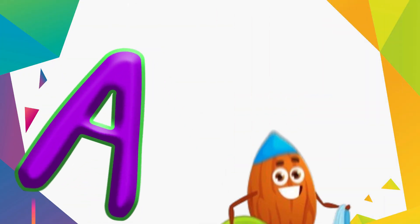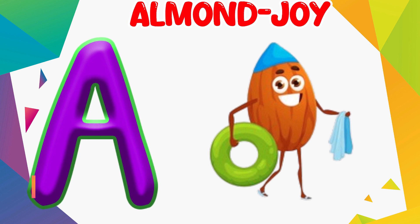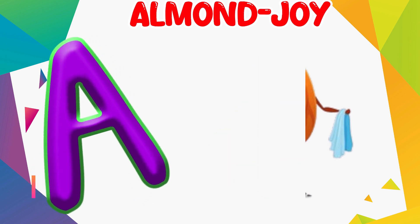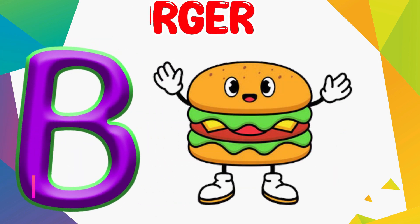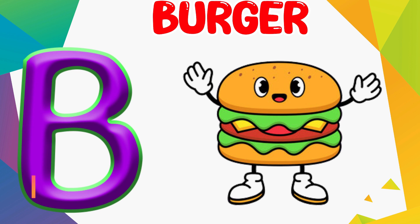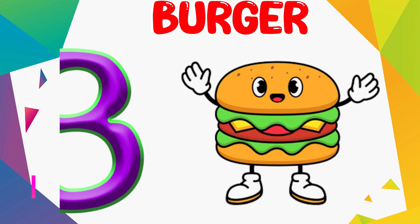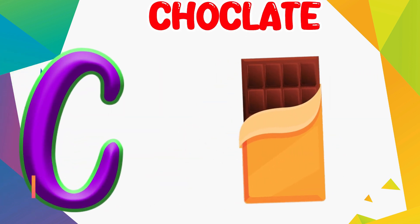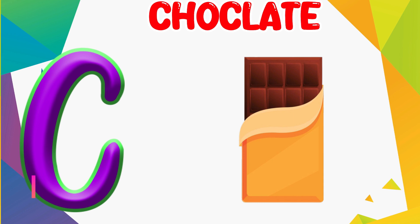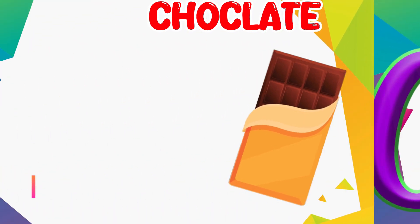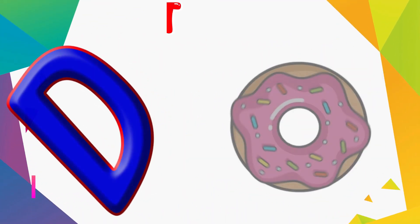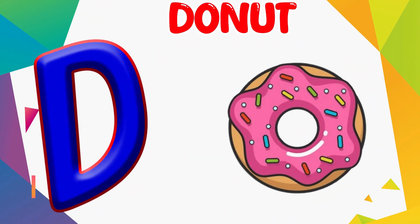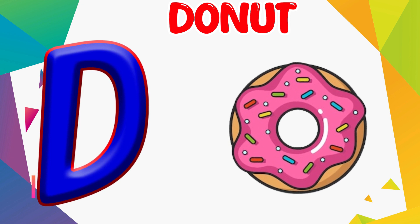A is for Almond Joy. A. Almond Joy. B is for Burger. B. Burger. C is for Chocolate. C. Chocolate. D is for Donuts. D. Donuts.